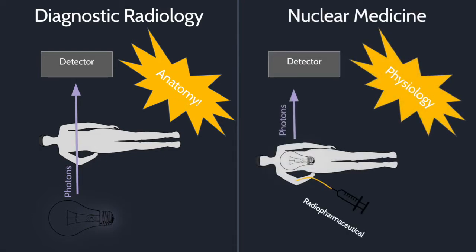Nuclear medicine is different for two main reasons. Firstly, nuclear medicine images primarily display physiology. We make this happen not by shining a light bulb onto the patient, but instead we turn the patient into a light bulb. We do this by injecting a radiopharmaceutical which localizes to the targeted physiology and then emits photons directly from the patient.